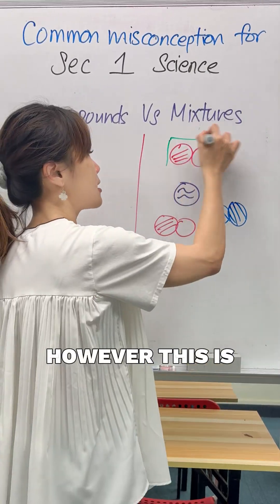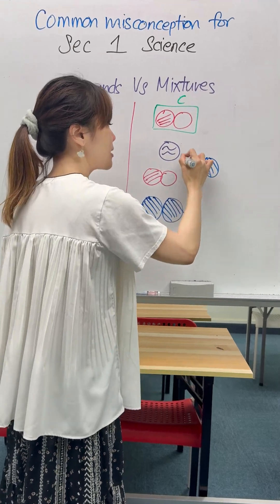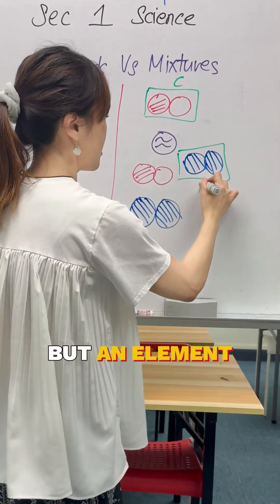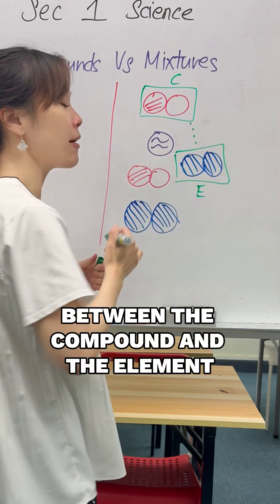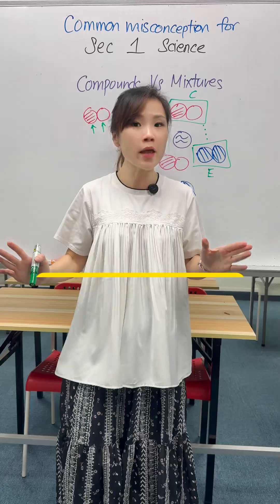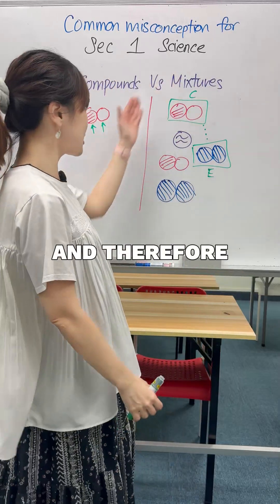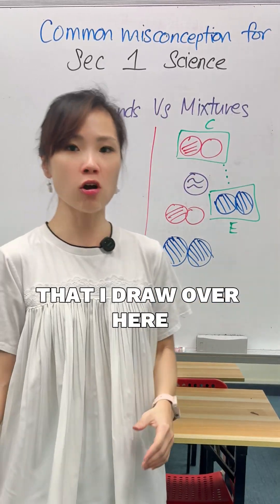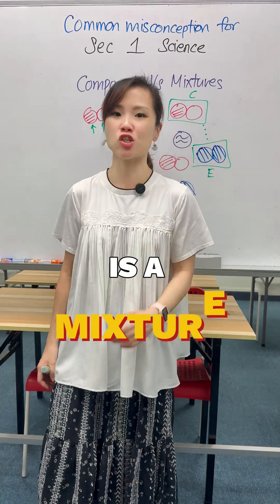However, this is a compound over here, but this is not a compound but an element. Between the compound and the element, there are no chemical bonds. They are not stuck together, and therefore this whole diagram that I draw over here is a mixture.